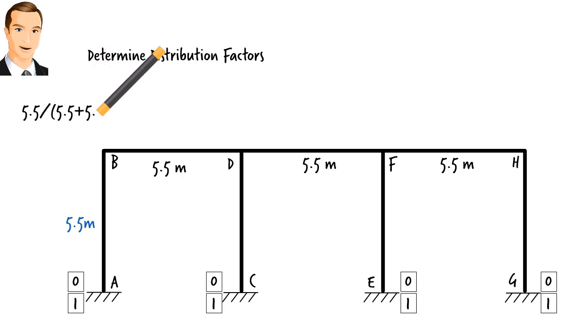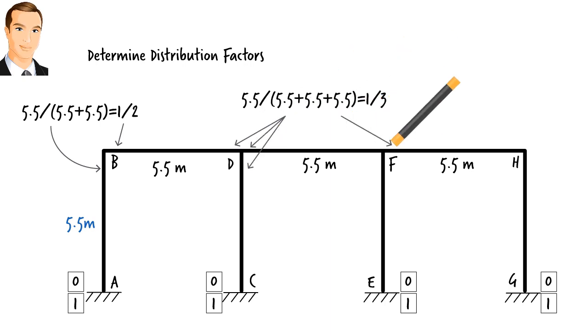At the fixed supports we get... At joint B, we get 1 over 2 at each end. At joints D and F, we get 1 over 3 at each of the three ends. And, we get 1 over 2 at the ends of joint H.